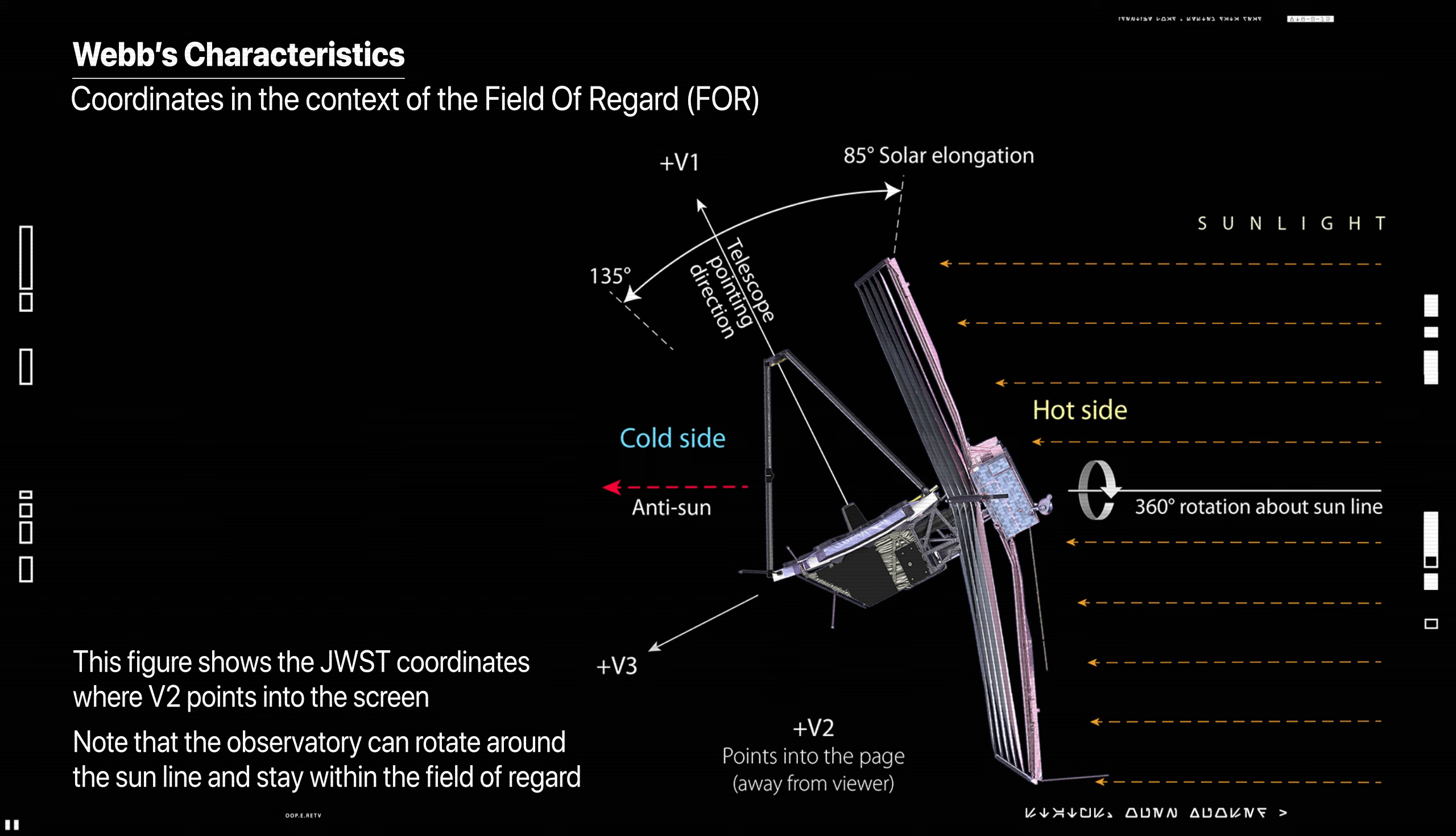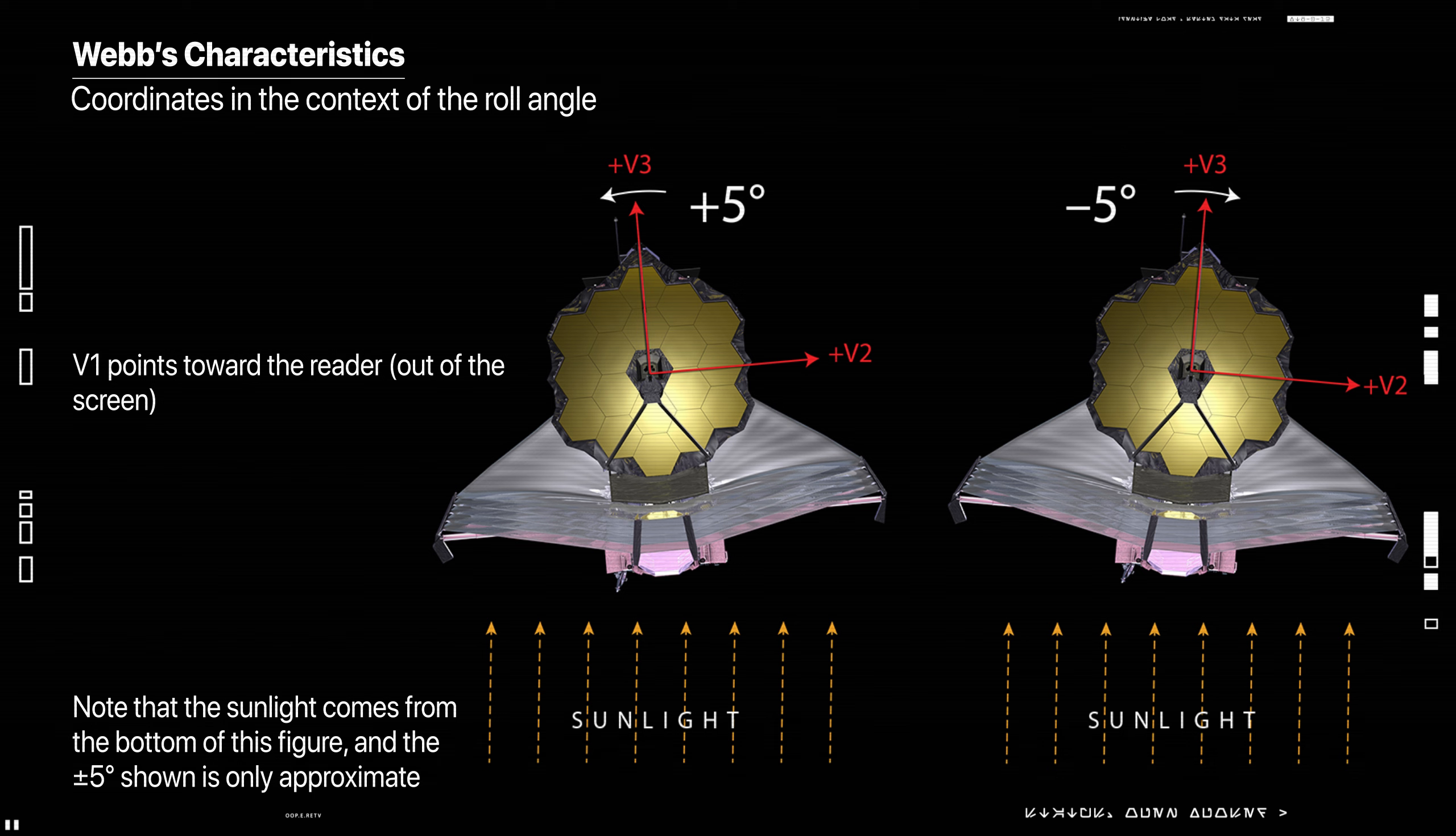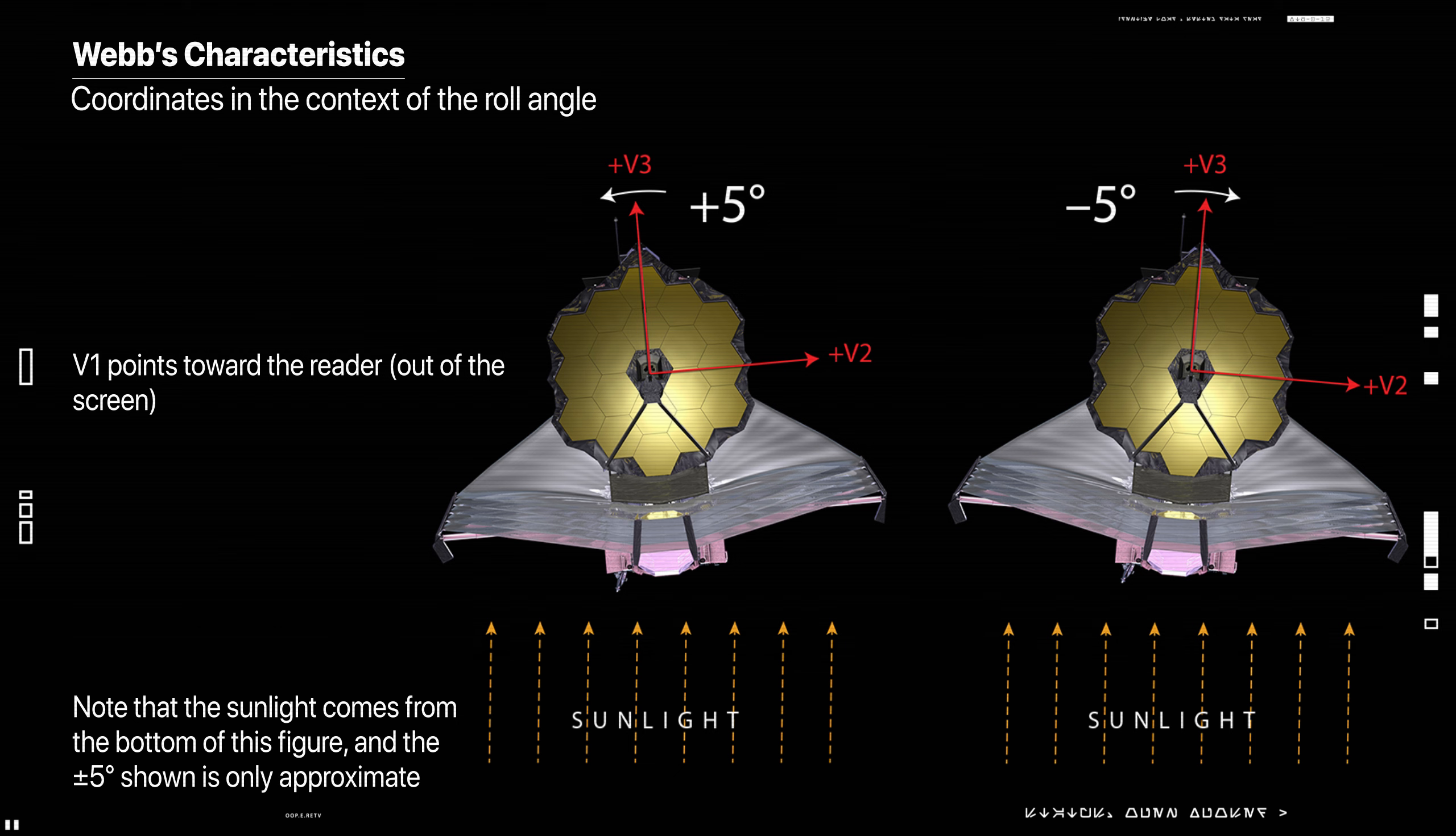In this view, the V2 axis is pointing into the screen. This is another view to highlight the restrictions on instantaneous roll about the bore side V1 axis. The amount the observatory can roll about the V1 axis is very limited due to the requirement to keep the telescope completely behind the sun shield at all times.